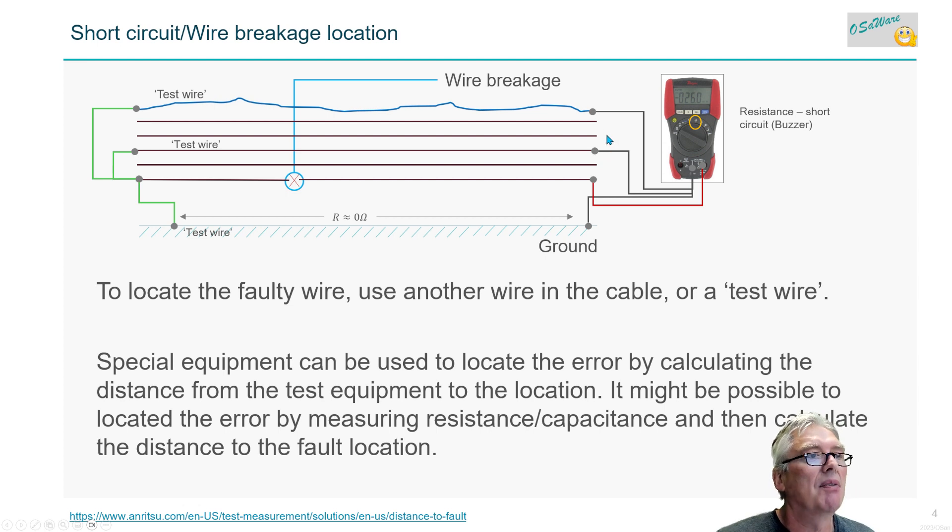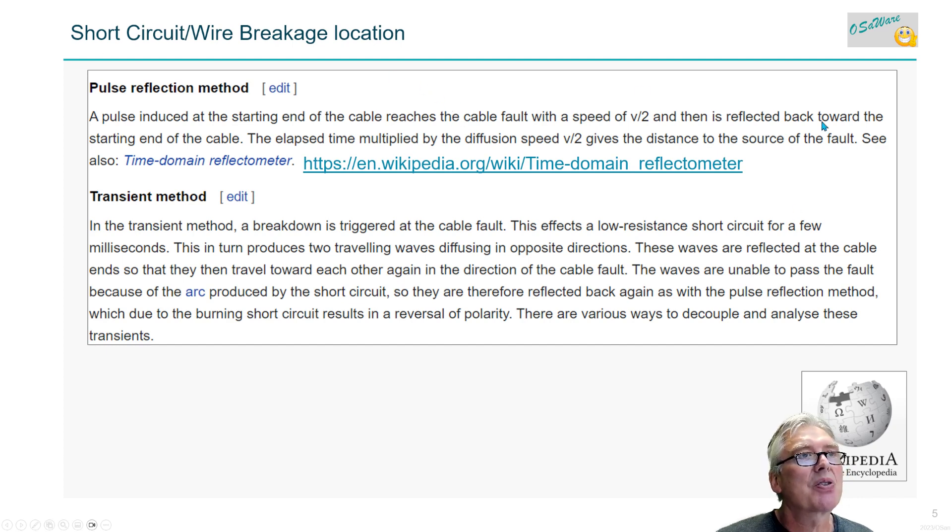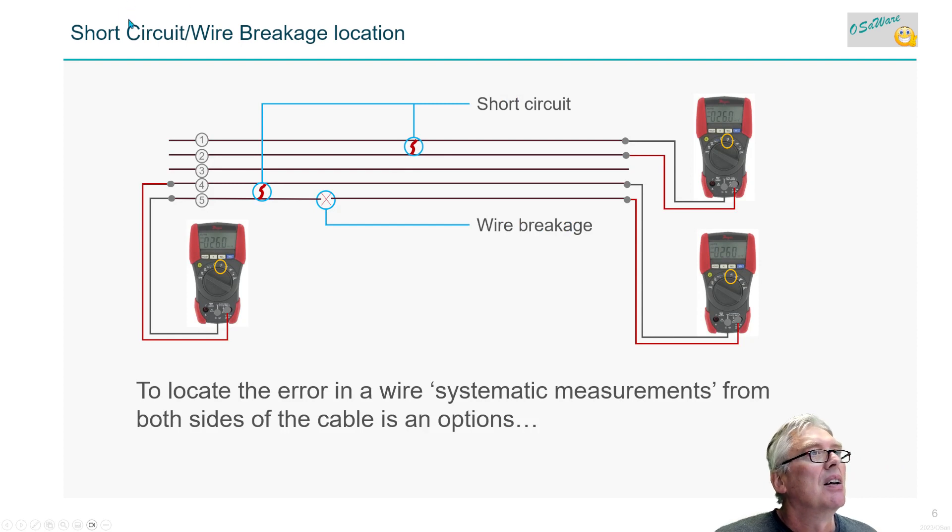Special equipment can be used to locate by calculating distance from testing location. It might be possible to look at error by measuring resistance, capacitance, and so on. Here's test measurements - pulse reflection method, transient method, and so on. You need to know a little about the cable itself. You can use systematic measurement from both sides of the cable.